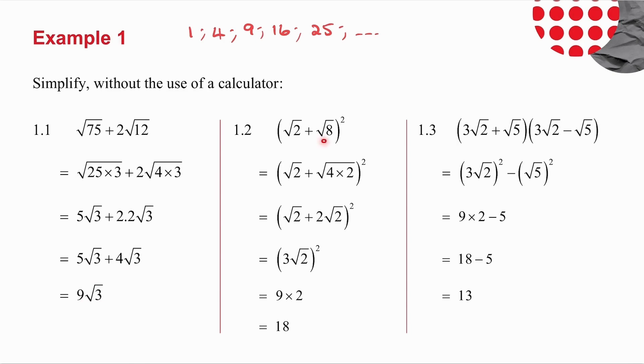1.2. 8, I can write as 4 times 2. The square root of 4 is 2, and I'm left with root 2. And then remember the square belongs to both of these inside. 3 squared is 9, root 2 squared is 2, and my answer is 18.